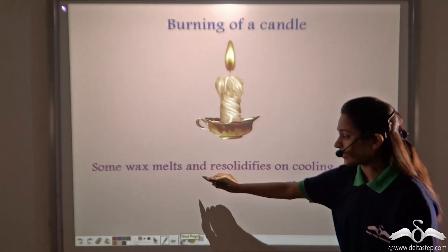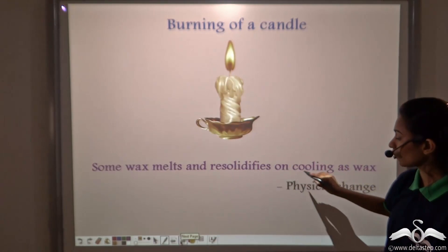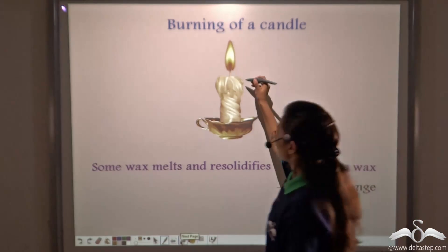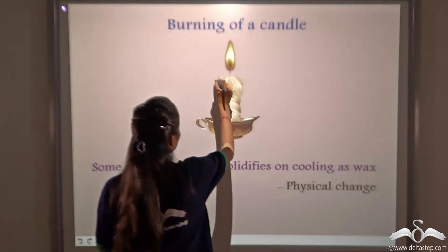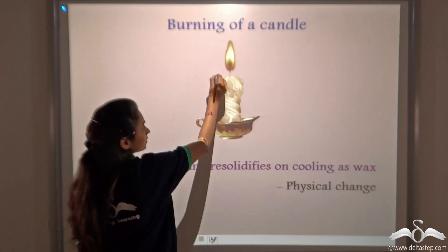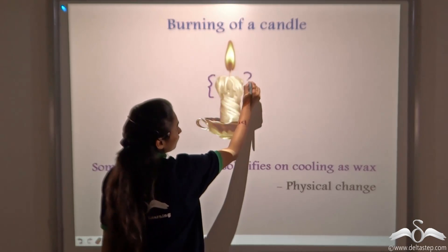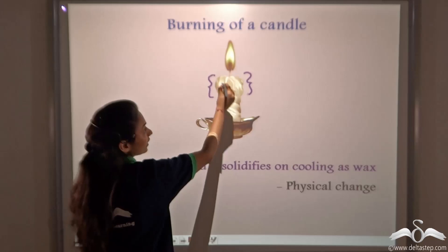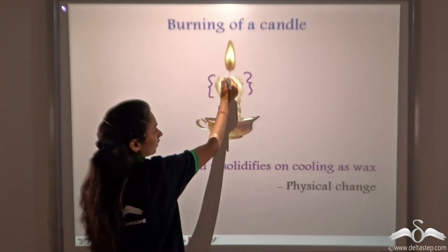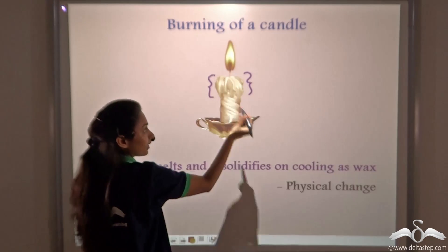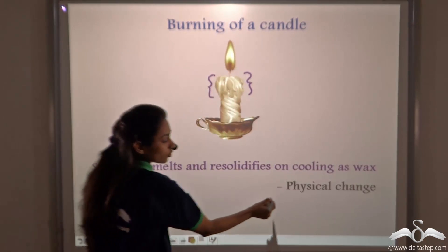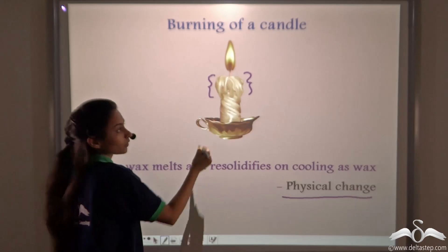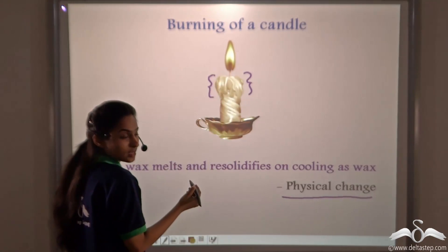Some wax melts and re-solidifies on cooling as wax. You can see when the candle burns, this wax melts and re-solidifies here. So we can see that when the candle is burning, the wax is melting and again becoming the same wax. So this is a physical change, as we are getting this wax back and it is not changing into a new substance.